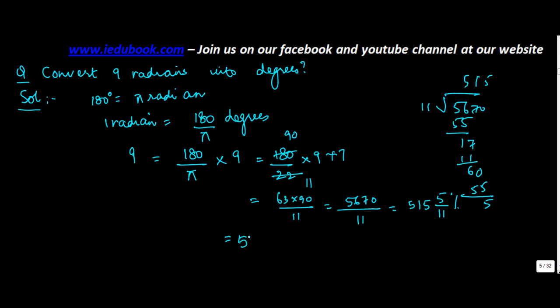Or 515 degrees plus... Can I convert this into minutes? Now you must be wondering, how do I convert it? You add a zero out here. So what you do is, this is 5 by 11 degrees into 60 minutes.